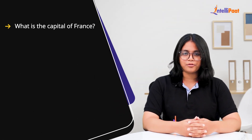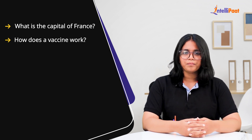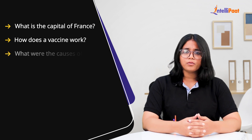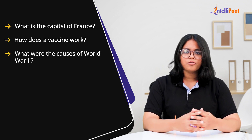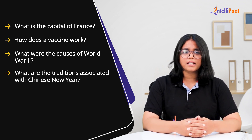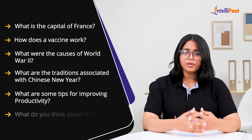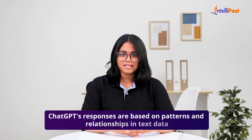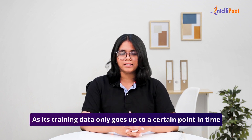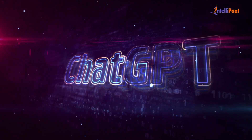Now let us look at what kind of questions you can ask ChatGPT. You can ask a wide variety of questions on a range of topics, like general knowledge questions — for example, what is the capital of France? Science and technology questions — for example, how does a vaccine work? You can also ask historical questions like what were the causes of World War II, or cultural questions like what are the traditions associated with Chinese New Year. You can ask personal questions like what are some tips for improving productivity, or open-ended questions like what do you think about the future of artificial intelligence? Keep in mind that ChatGPT's responses are based on patterns in text data and may not always be accurate or complete, and it may not have access to the most up-to-date information. However, ChatGPT is constantly improving and updating its responses based on its training data and feedback from users.